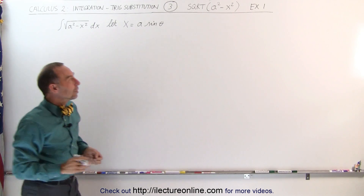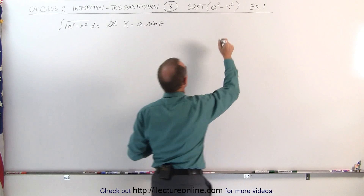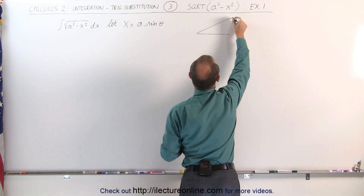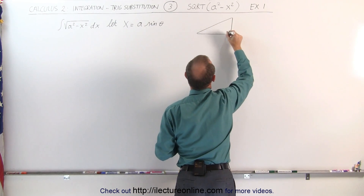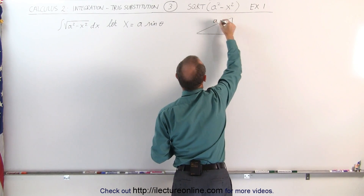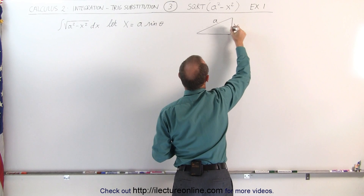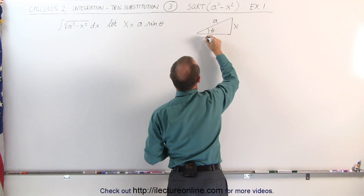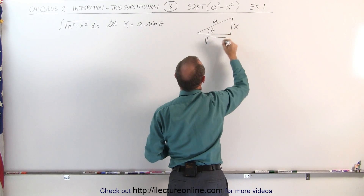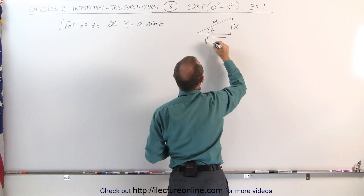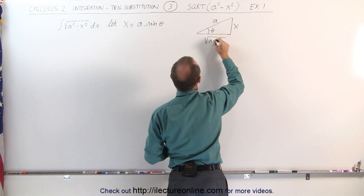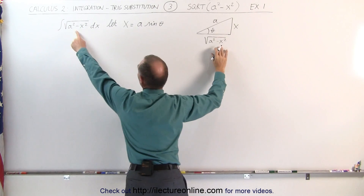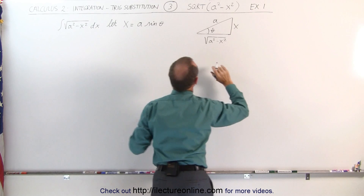We're also going to need the relationship on the triangle, so it's always good to write down the triangle. Here, a is the hypotenuse, x is the opposite side, there's theta, and the adjacent side is going to be the square root of a squared minus x squared, and that's related to this substitution right here.